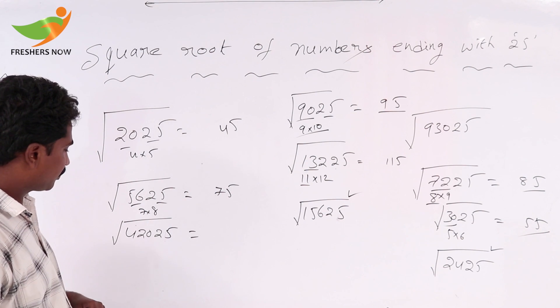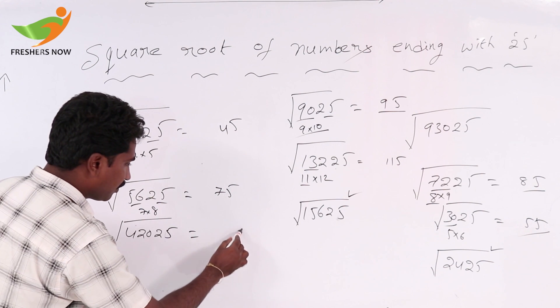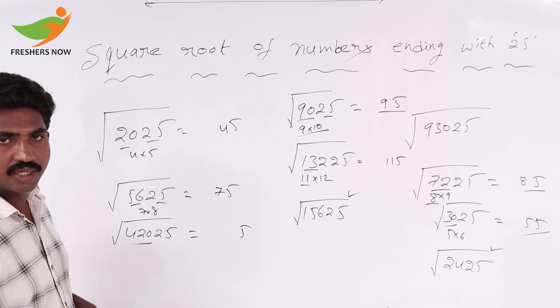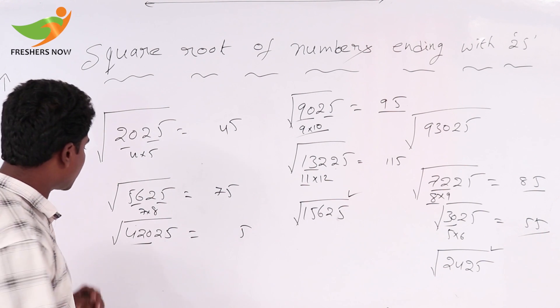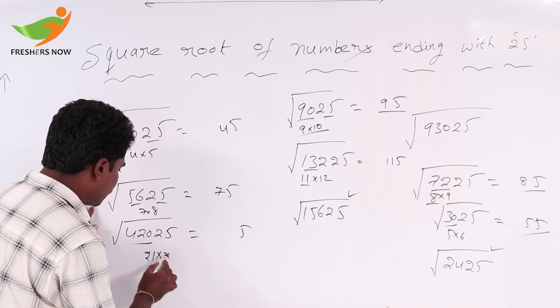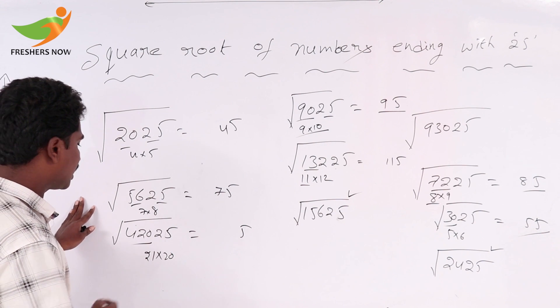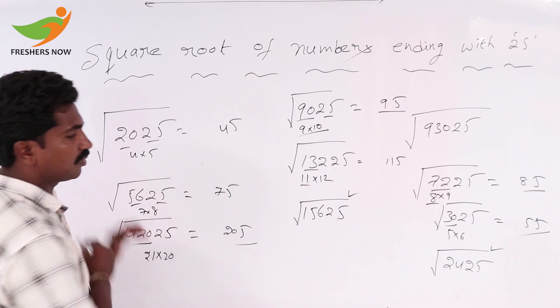Next value, when compared to this, this is bigger value. 425 is 5. 420, can you write 420 into the multiple of two consecutive numbers? 21 into 20. I think 21 into 20. Here we go. The small number is 20.